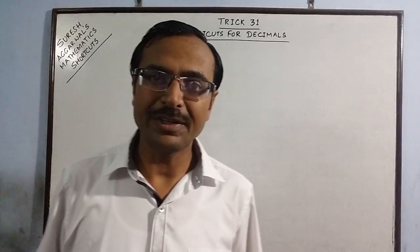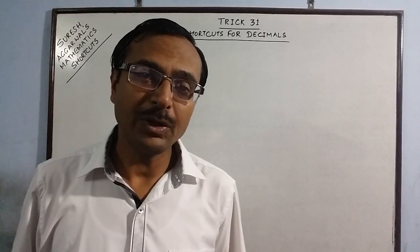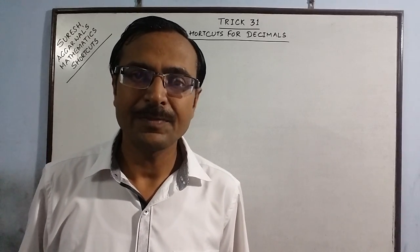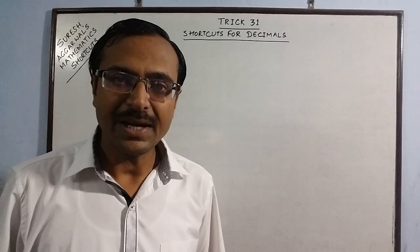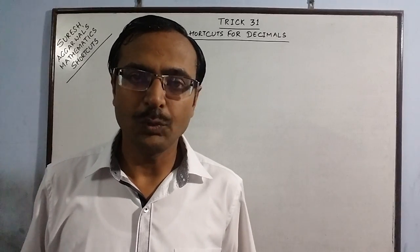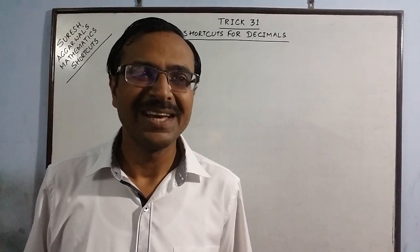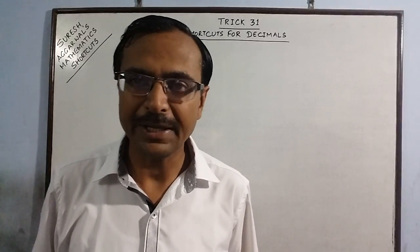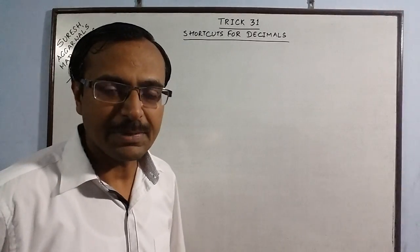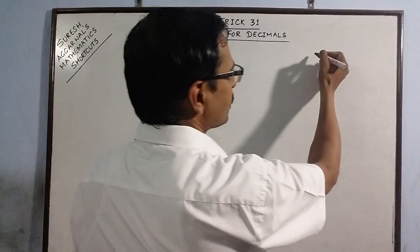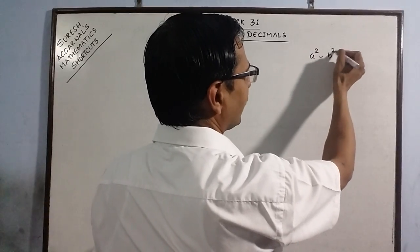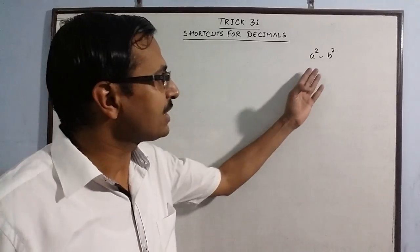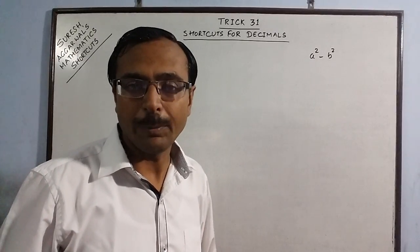Today I am going to deal with some of the common questions asked in competitive examinations. If you understand today's trick, you will be learning a lot. The first type of calculation is based on the algebraic identity a squared minus b squared. Whenever you have problems involving decimals, these are the kind of problems which are very common.